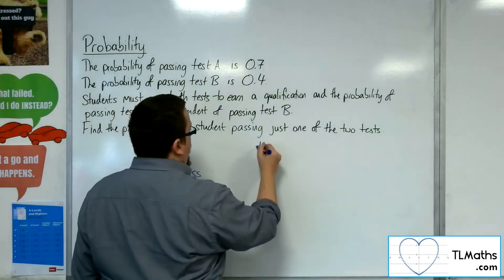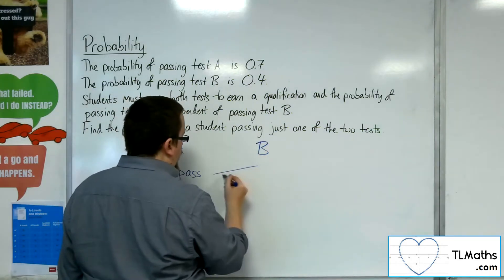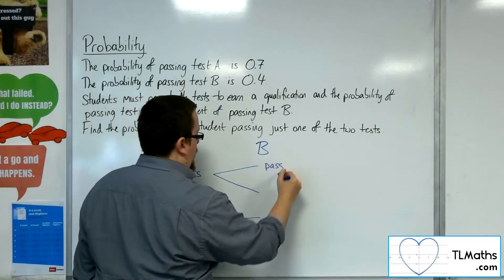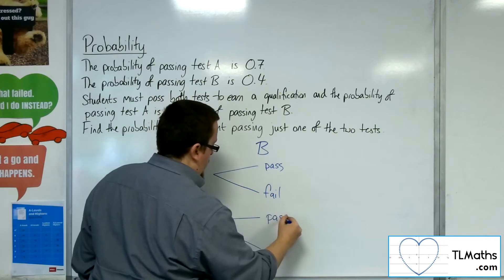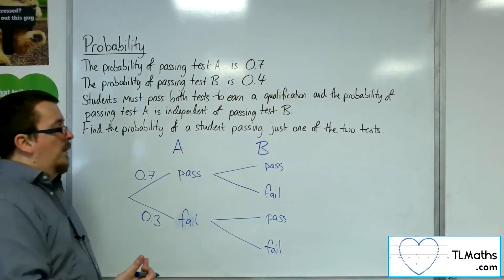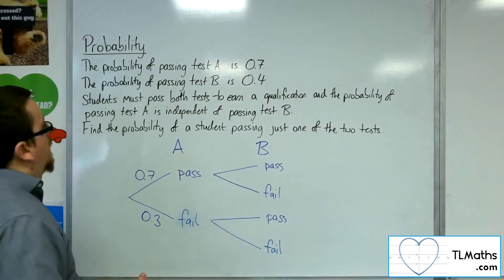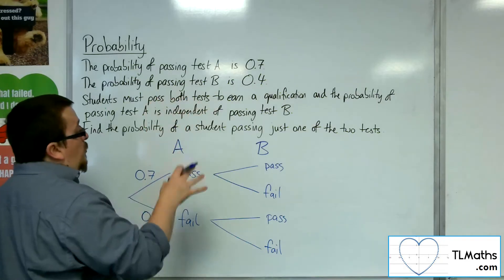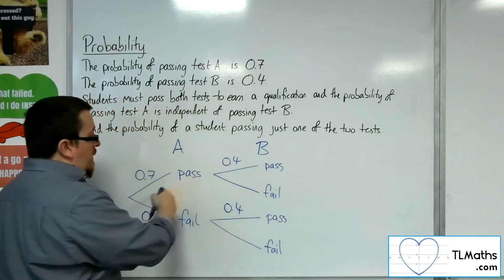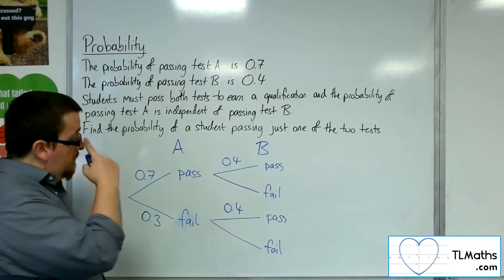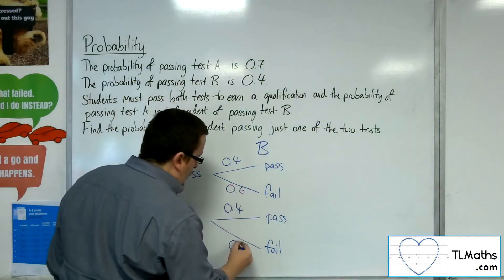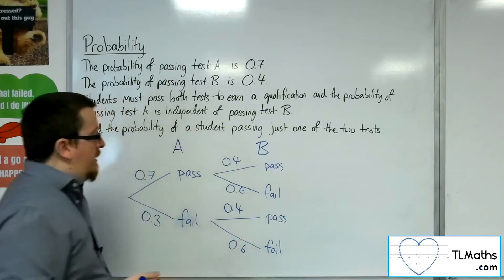Then they've got to sit test B, where they either pass or fail. Because the two events are independent of one another, the probability of passing test B is 0.4 regardless of whether they have passed or failed test A. So the probability of failure in both cases will be 0.6, because those two probabilities have got to add up to one in either case.